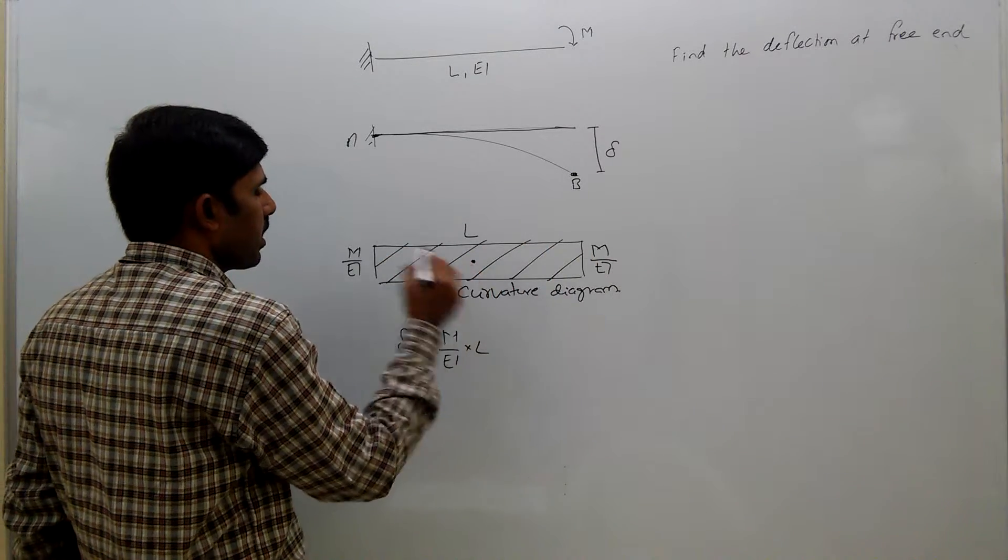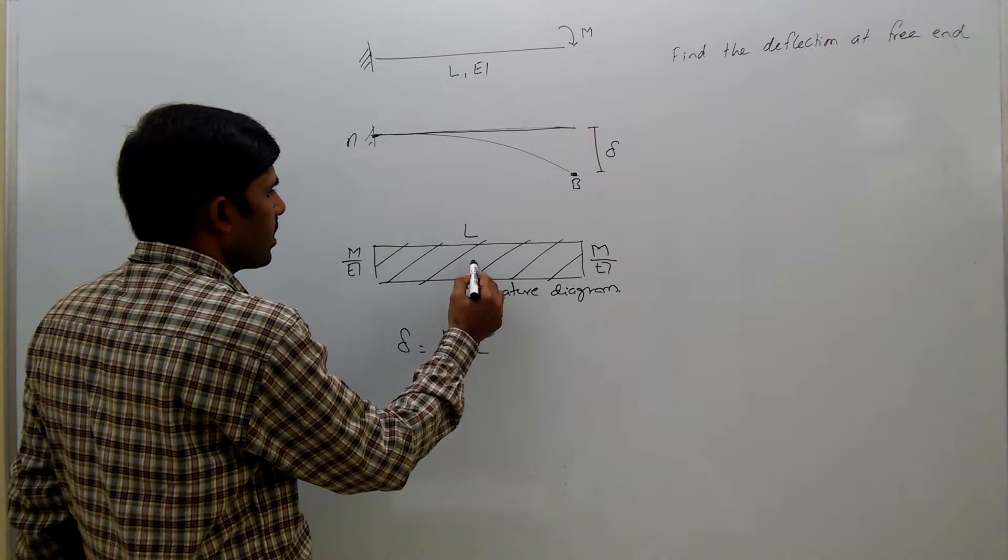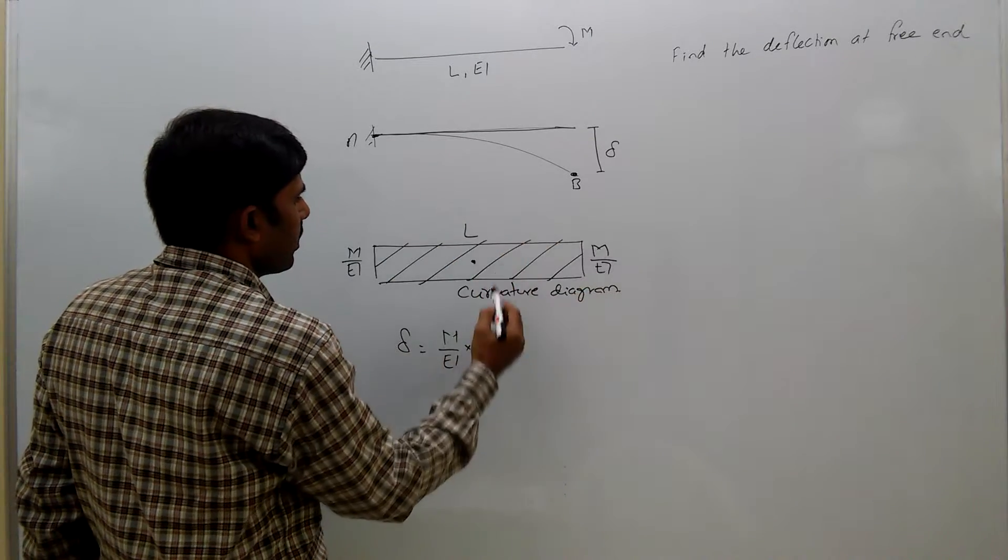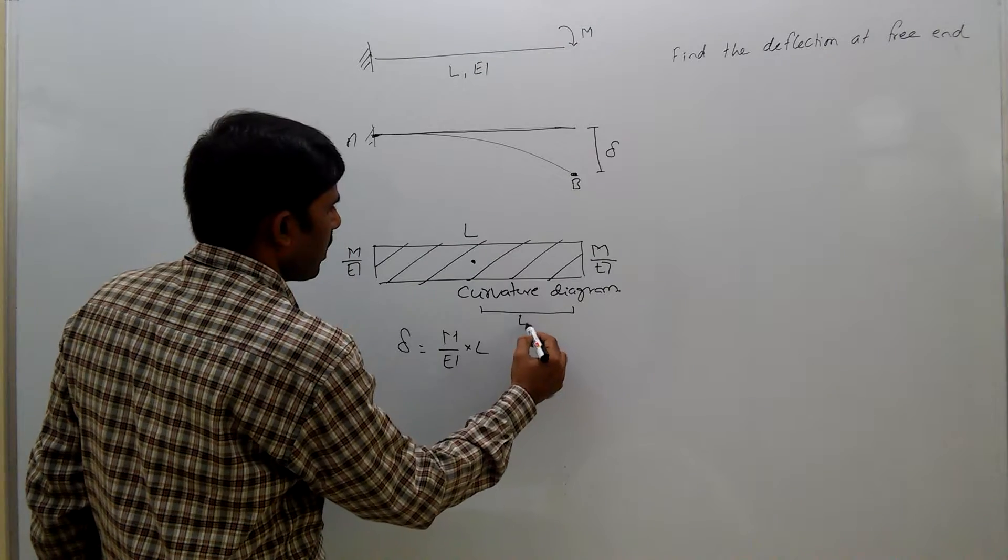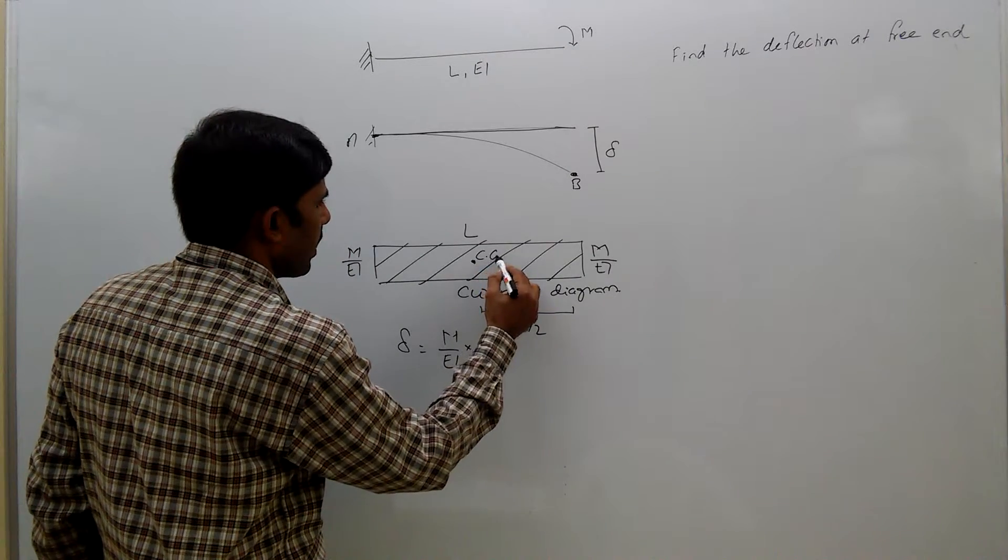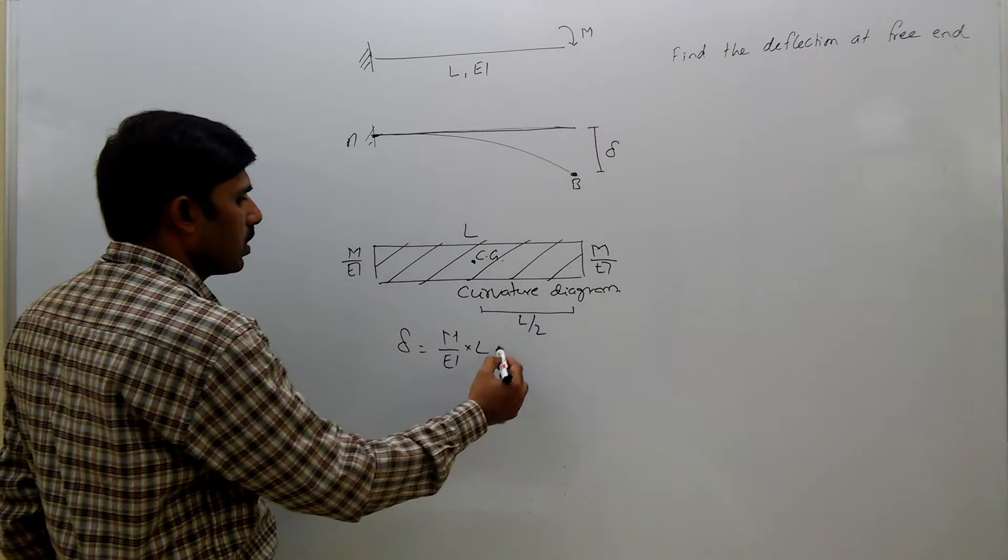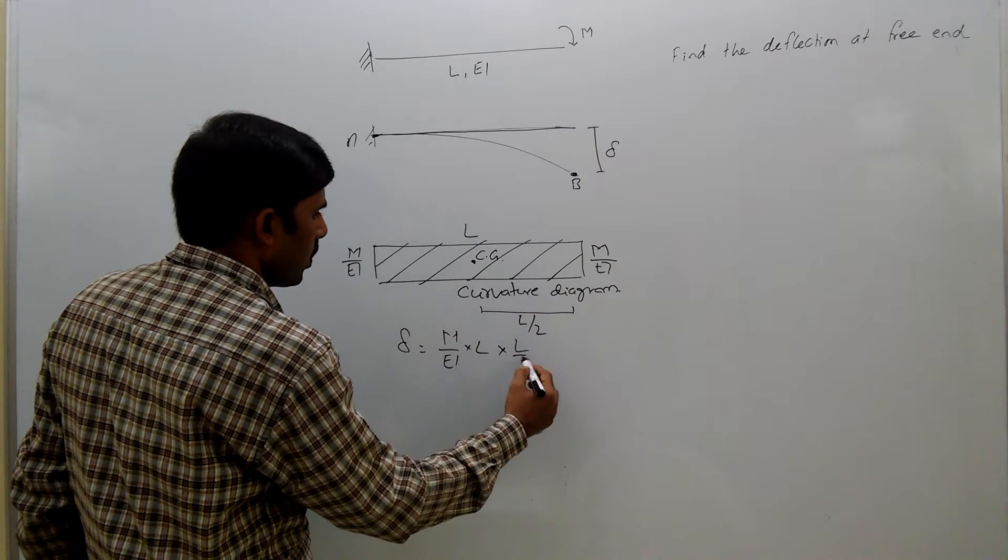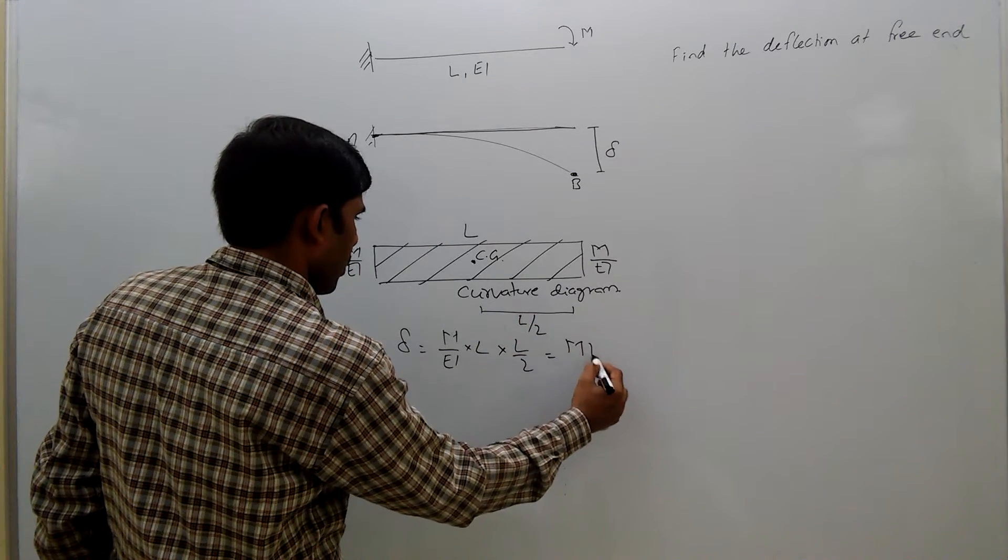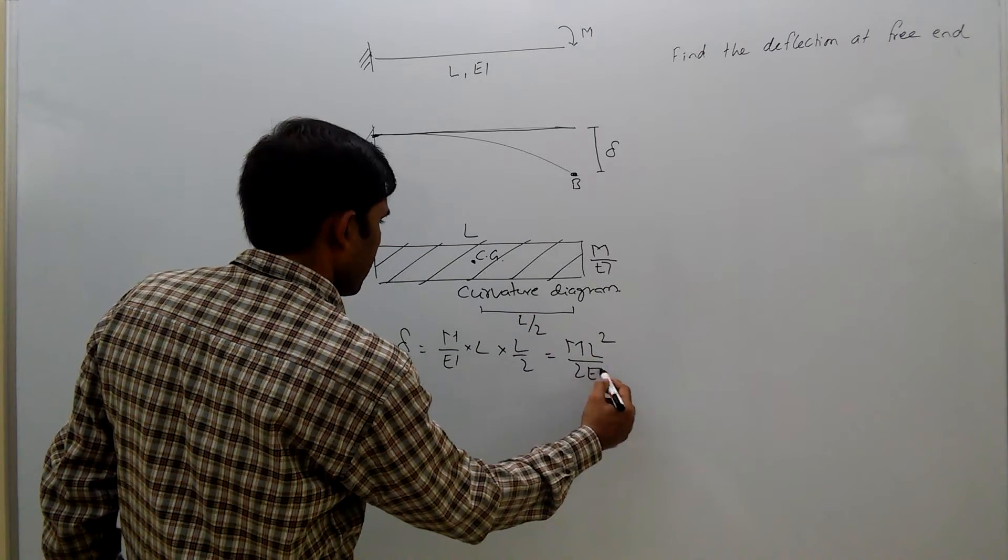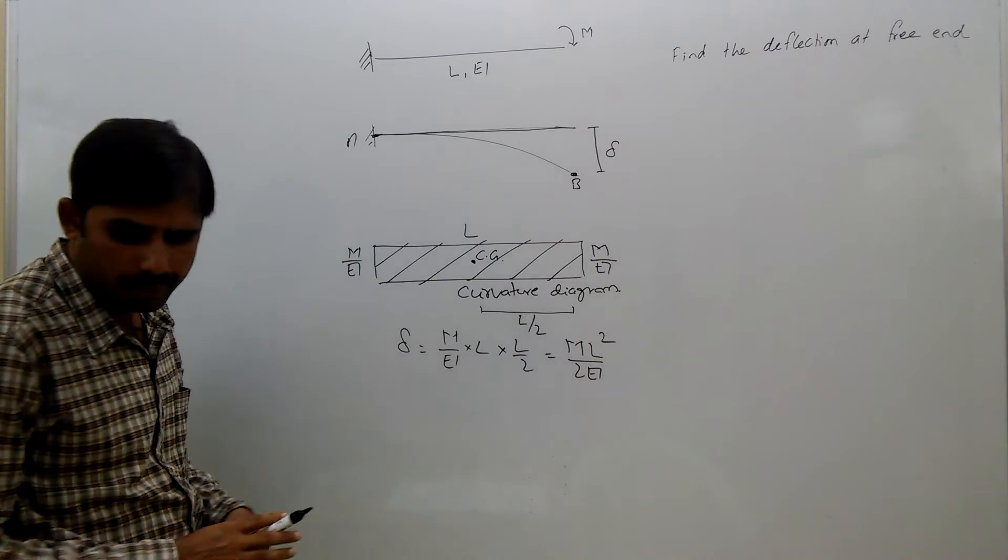Being a rectangle, the centroid distance is at L by 2 from B. This is L by 2, this is CG, the center of gravity of this area. Now, multiplying by the centroid distance L by 2, we will get M L squared by 2 EI. So delta is M L squared by 2 EI.